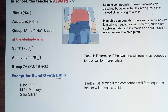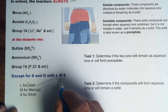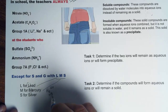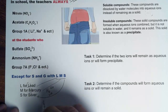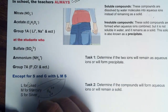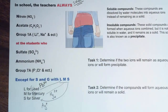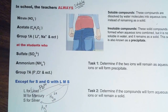What does LMS stand for? L is for lead (Pb²⁺), M is for mercury (Hg₂²⁺), and S is for silver (Ag⁺). The LMS exceptions only apply to S (sulfate) and G (Group 7A). When ions in Group 7A bond with LMS, the compound will be insoluble, but when bonded with something else, it will be soluble.